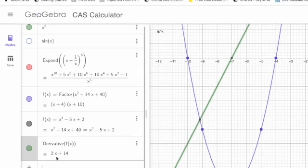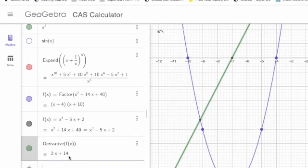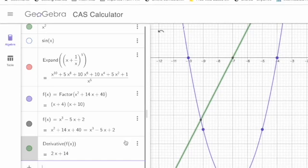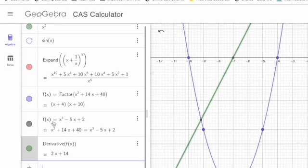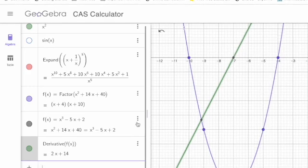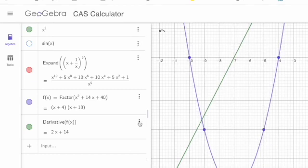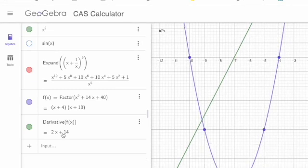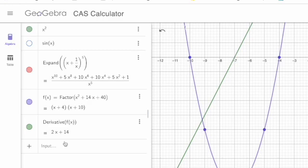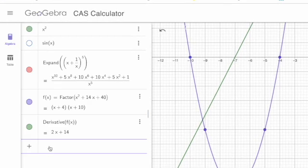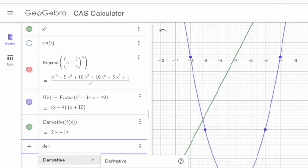Look, so derivative of fx is 2x plus 14. OK, no, this is not correct. Maybe. Oh, because I have already defined fx. So let me just change this. Delete. And here you can see 2x plus 14. Because my fx was defined twice. So it was by my mistake.